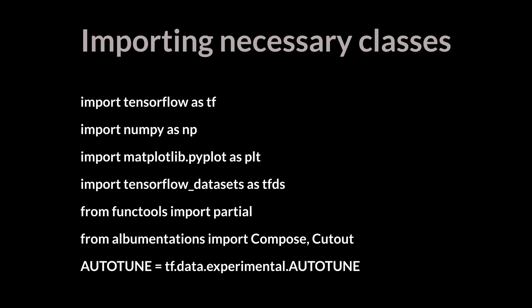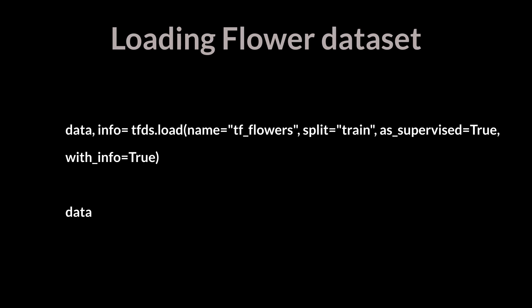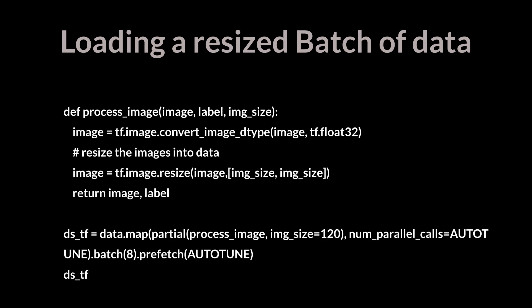We begin our code by importing the required classes and methods. Then we define the autotune variable, which denotes the appropriate number of processes that are free for working. Now it's time to download the flowers dataset using TensorFlow Datasets. This dataset is only split into a training set. Most dataset input pipelines should end with a call to prefetch, which allows later elements to be prepared while the current element is being processed, leading to improved latency and throughput at the cost of additional memory. The map function applies the given transformation function to the input data.